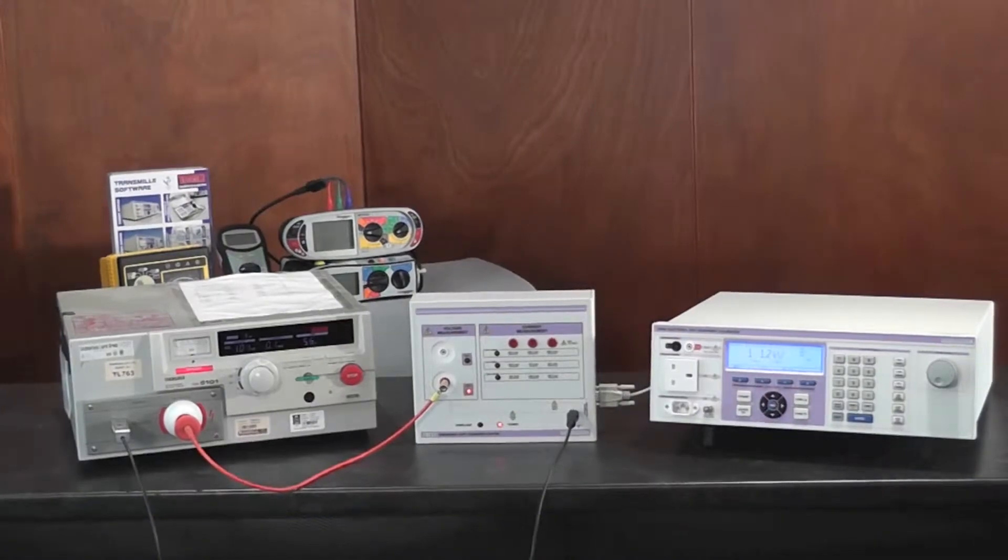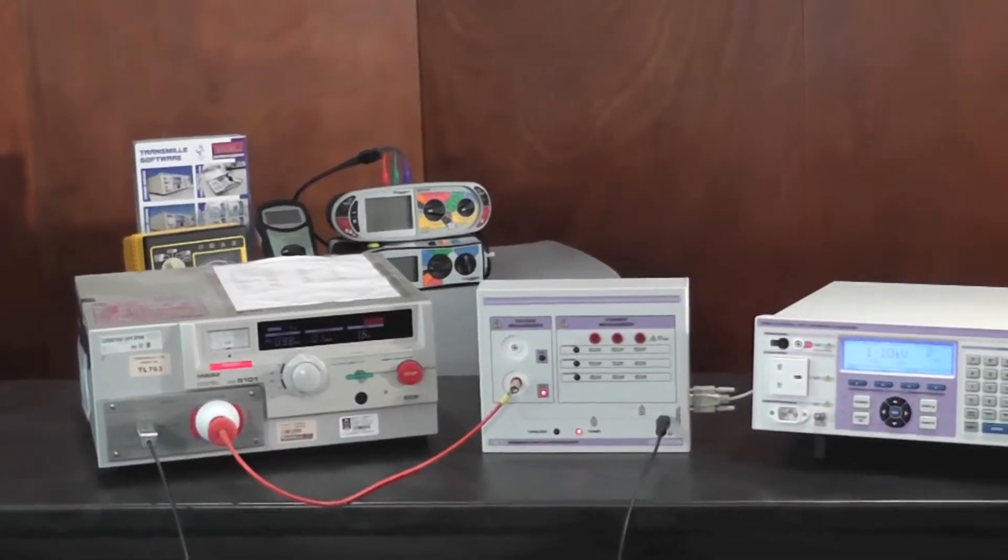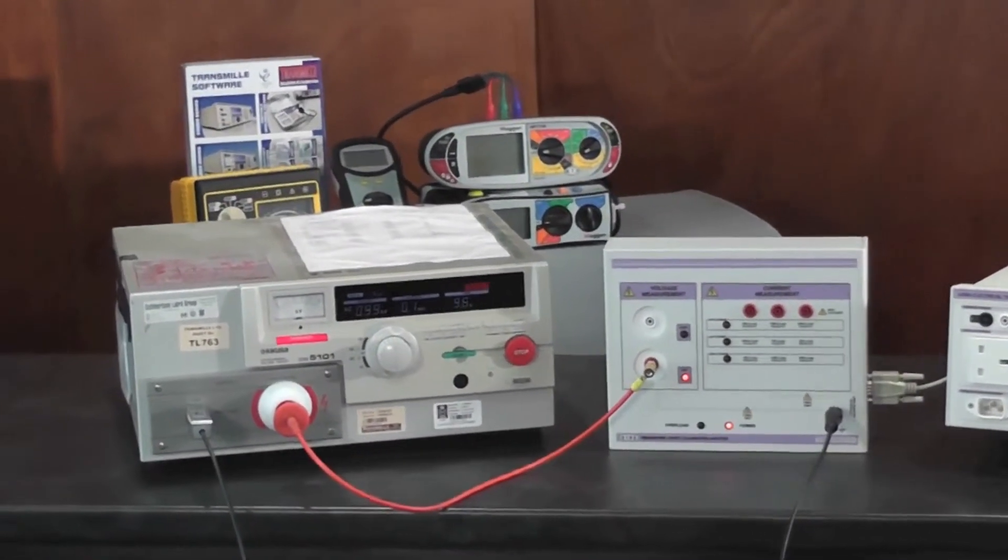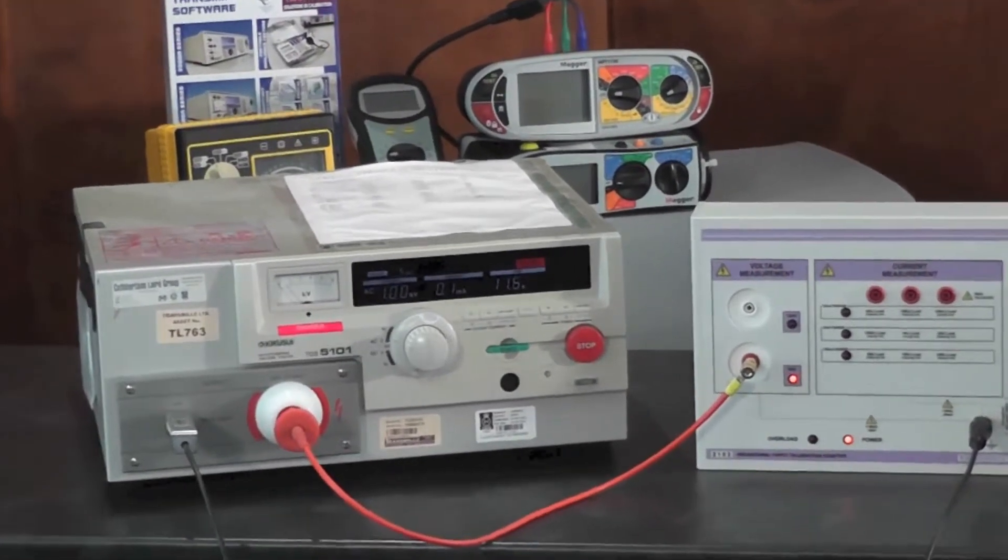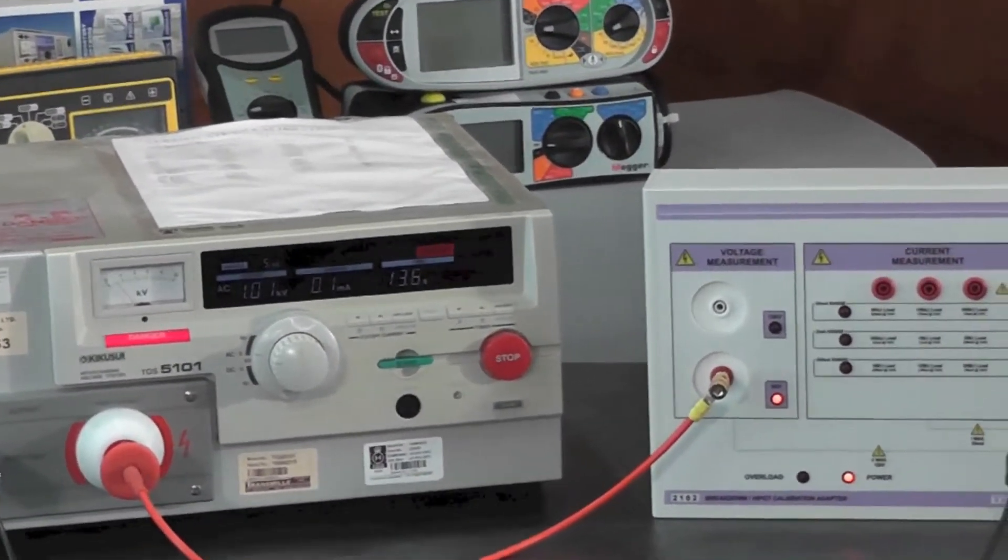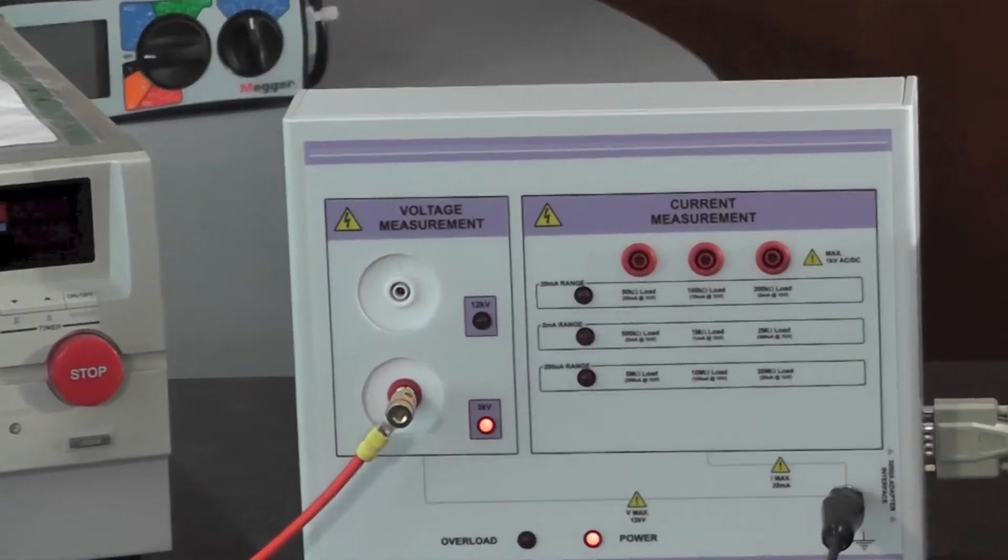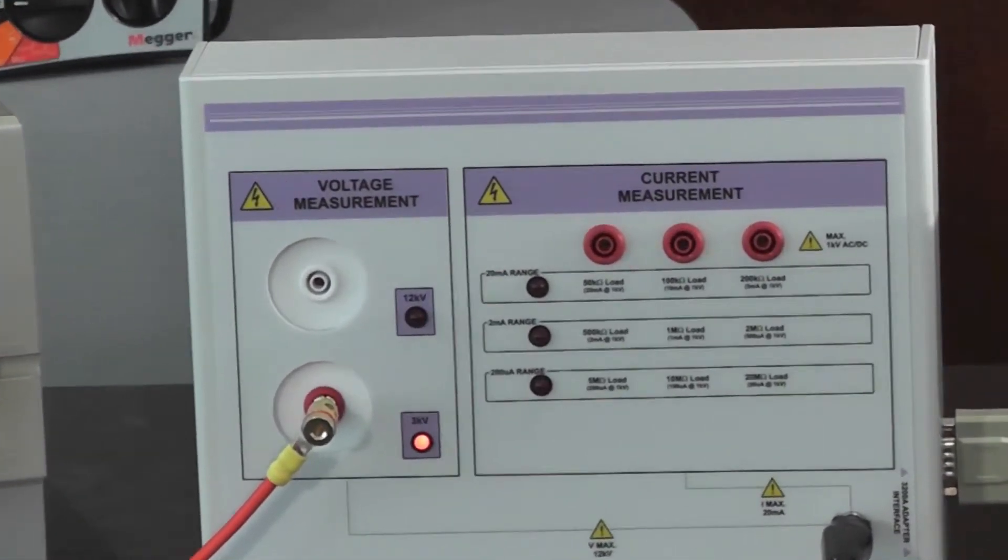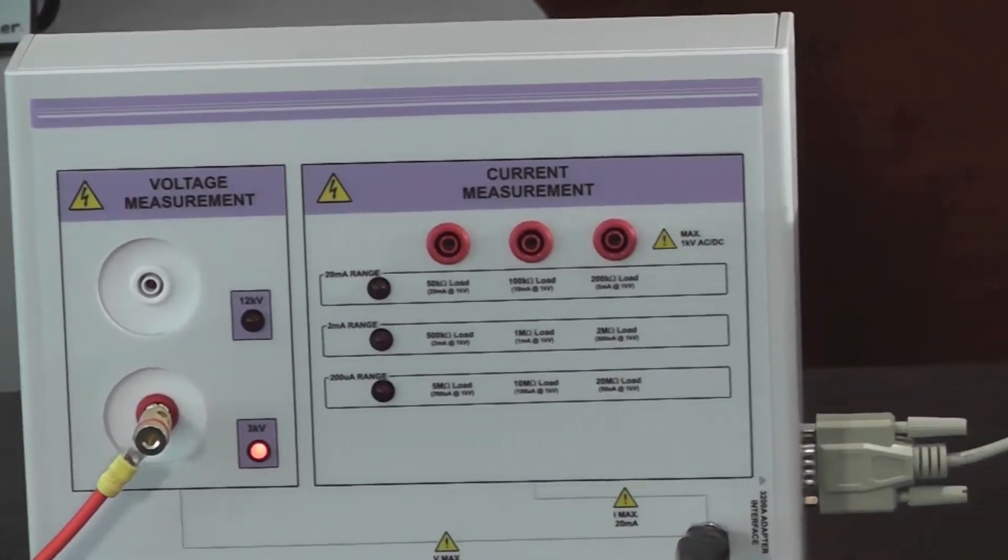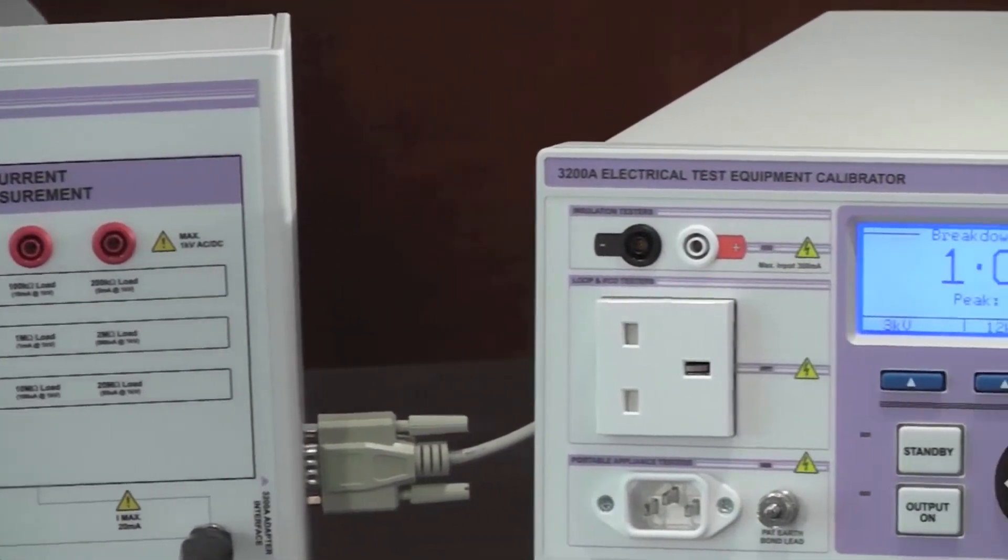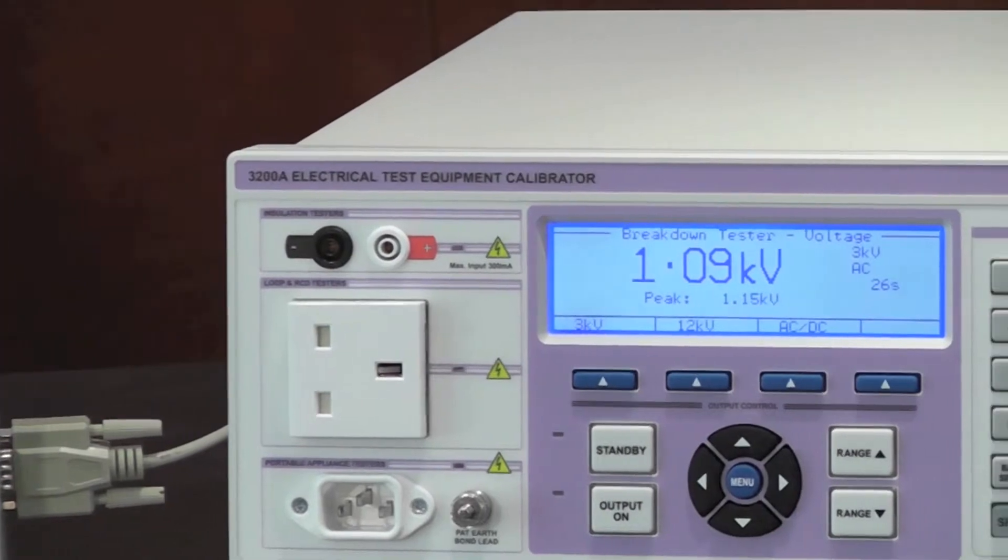The 3200A provides a unique solution for calibration of breakdown and high pot test adapters using the external breakdown adapter. Using the external adapter, voltages of up to 12 kV AC can be measured with loading of up to 20 milliamps. This makes calibrating these dangerous instruments safe.